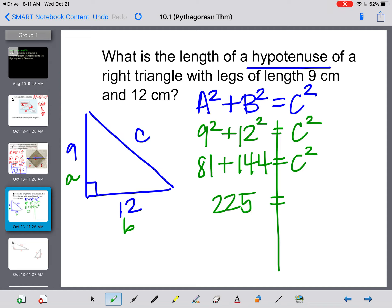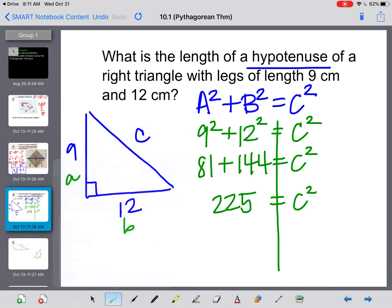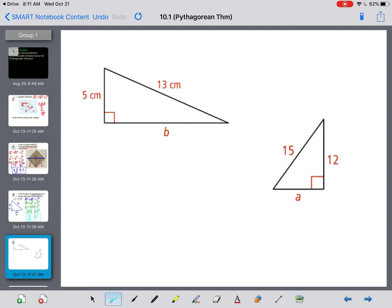I don't know what C is, so I have to leave that. 81 plus 144 is 225. And then to get rid of my squared or my second power, I need to do that square root on both of these. And this one comes out nice. The square root of 225 is 15. And our label was centimeters. 15 centimeters.